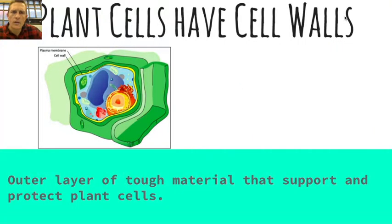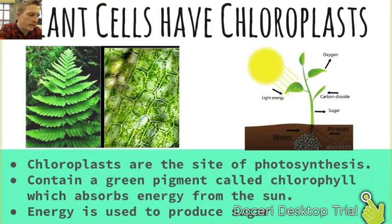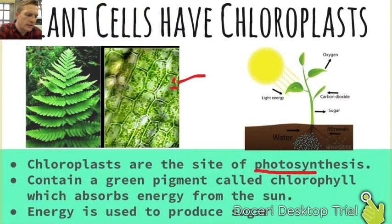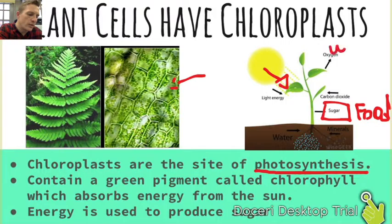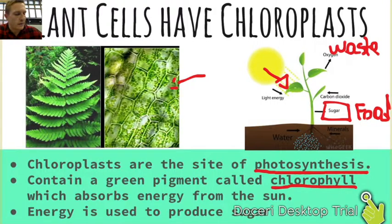Plant cells also have chloroplasts. Inside the plant, there are square little cells with small green structures inside — those are the chloroplasts. They are the site of photosynthesis, where the energy from light is used to create sugar or food for the plant. In doing so, the plant gives off oxygen as a waste product. Inside the chloroplasts is a green pigment called chlorophyll, which is the chemical that physically absorbs the sun's energy to convert into food, producing sugar.